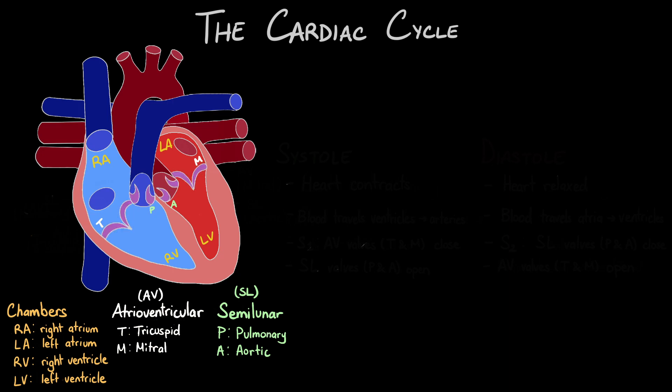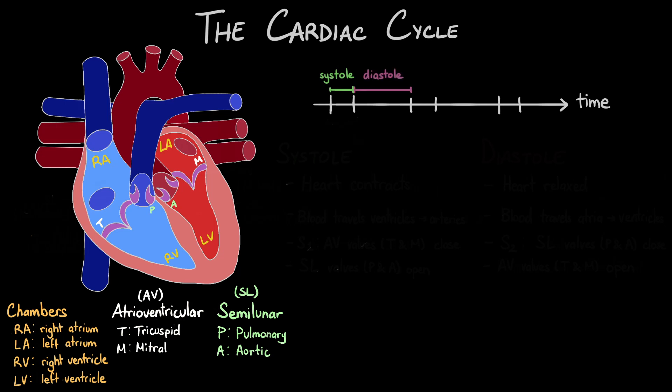Take a moment to think about the heartbeat. If we were to draw out the sounds on a time graph, it would look something like this — lub dub. One thing we notice is that the cardiac cycle has two phases: this short phase called systole and this longer phase called diastole.